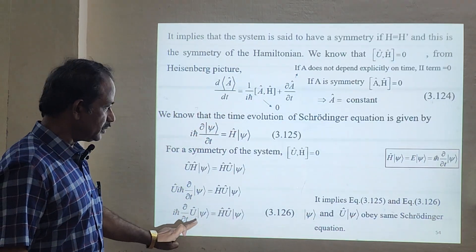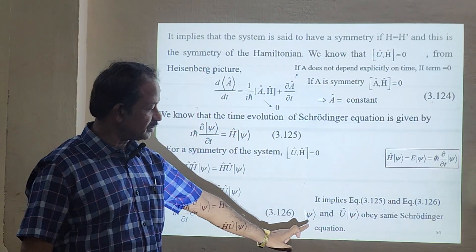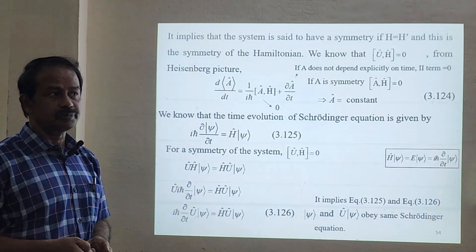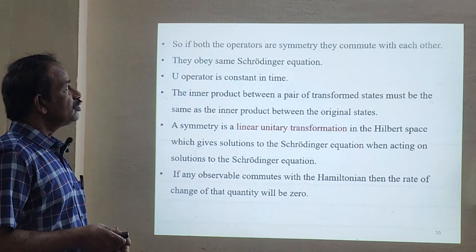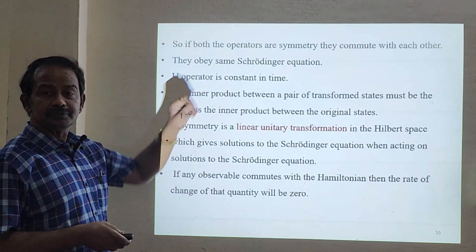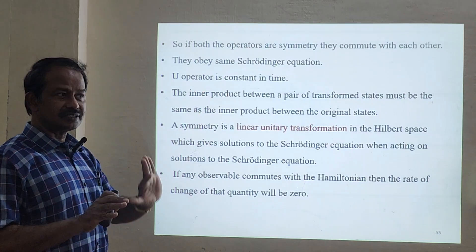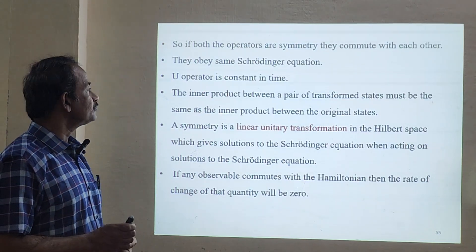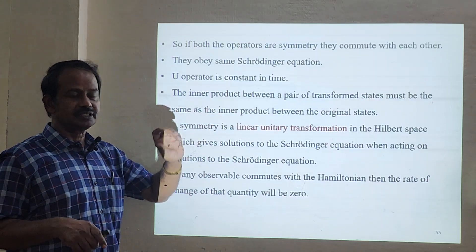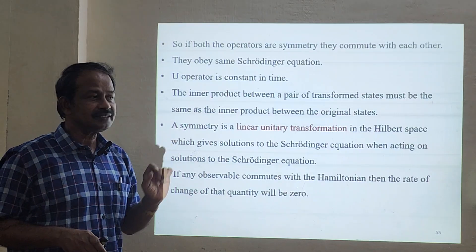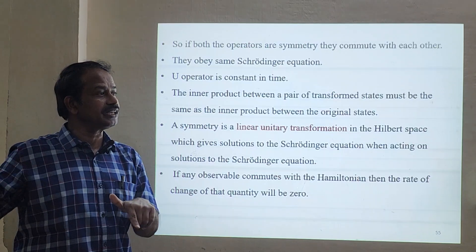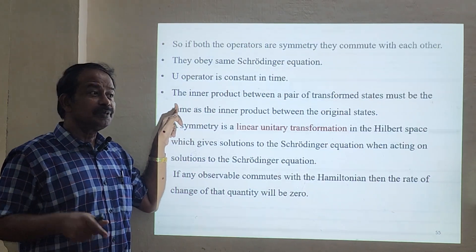Looking at equations 3.125 and 3.126, this implies that ψ and U·ψ obey the same Schrödinger equation, which shows the symmetry. If both operators are symmetries, they commute: [U, H] = 0. The U operator is a conserved quantity. The inner product between the pair of transformed states must be the same as the inner product between the original states — meaning the inner product before and after the measurement, in terms of time or phase, is the same. The inner product is preserved.